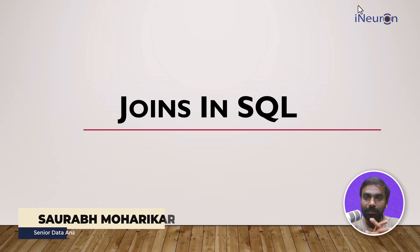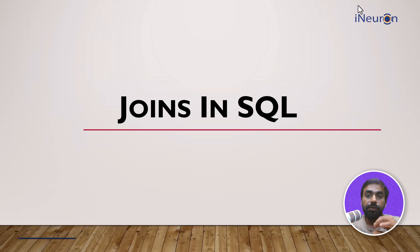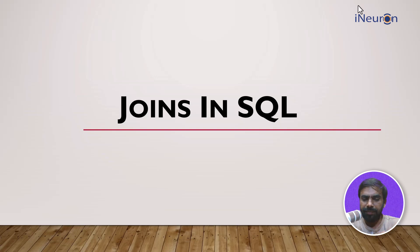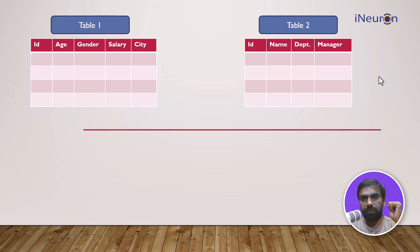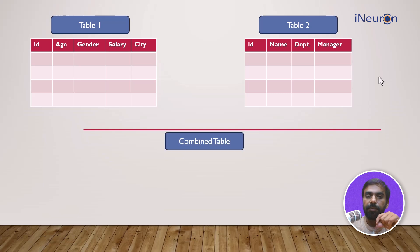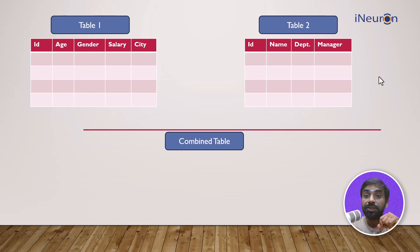Let's move on to the most important portion in SQL, which is joins. As the name suggests, joins help us join two tables — I can use selective information from multiple tables and create a combined temporary table. For example, table one has id, age, gender, salary, and city of employees, and table two has id, name, department, and manager. What if I want certain columns from table one and certain columns from table two to create a combined table? That is possible through joins. Let's say I want id, age, and gender from table one.